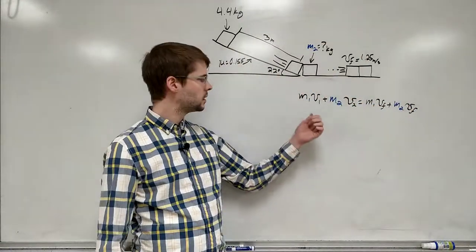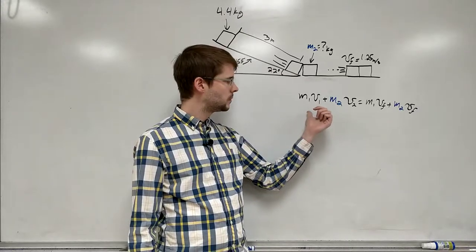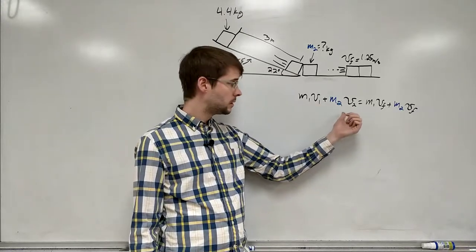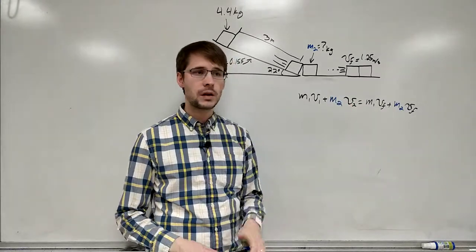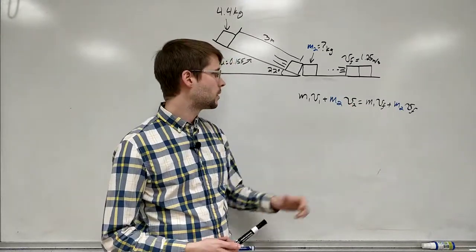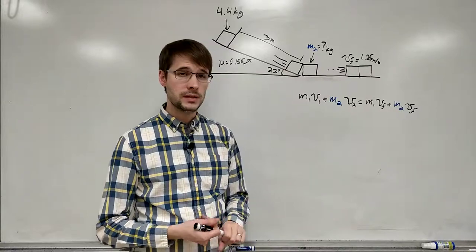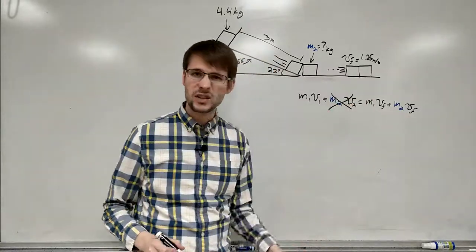So when we look at this we know m1. We are looking for m2. We don't know, well actually we do know v2 because it says it started at rest at the bottom. So v2 is actually 0. That term goes away.